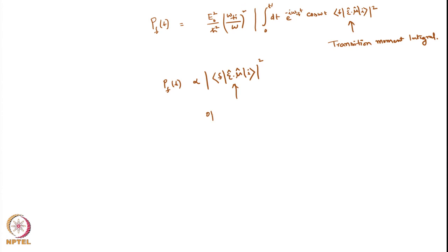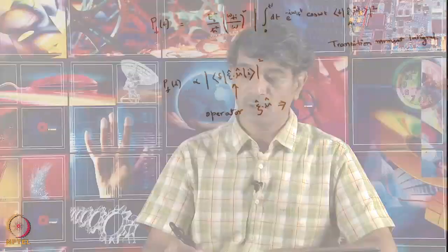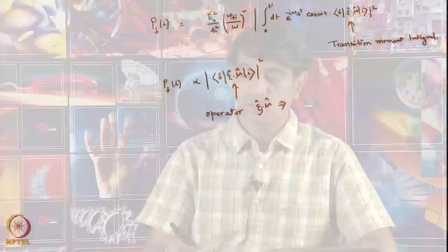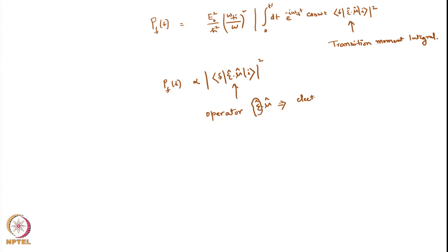In the transition moment integral, the operator E·mu indicates that the dipole moment of the molecule or atom — and note that dipole moment here is not the same as the permanent dipole moment mu-naught — interacts with the electric field epsilon. The electric field must be parallel to the dipole moment, or at least have some projection onto it; it cannot be perpendicular.